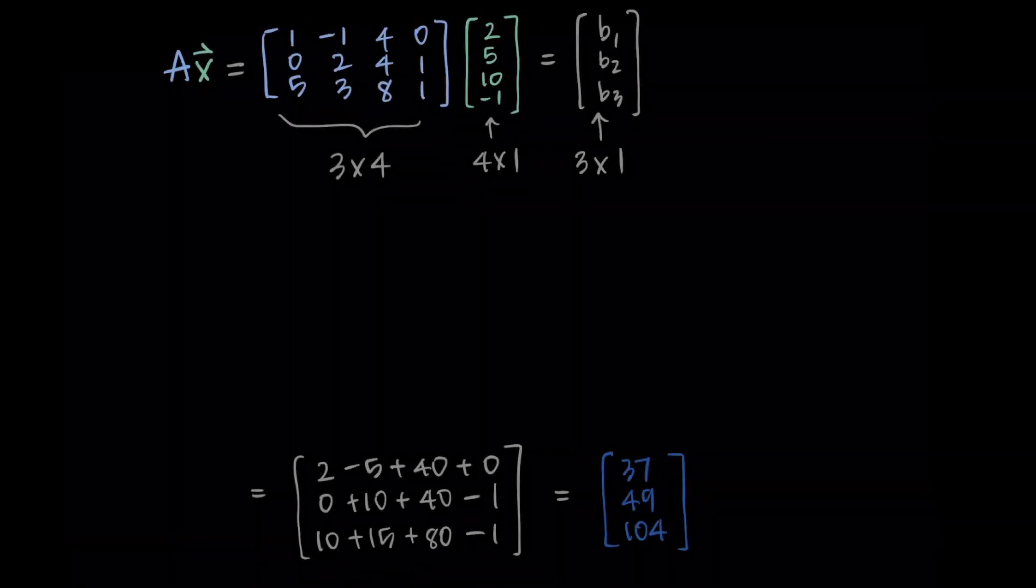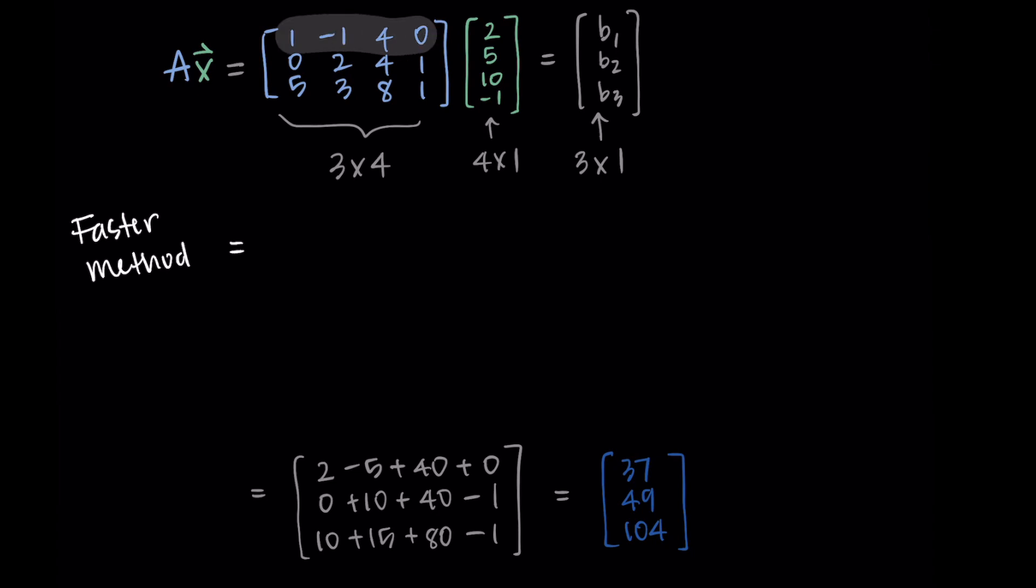Alright, so similar to the last example I just want to show you a bit of a faster method that we'll start to use as we get more fluent with this. So starting with our original problem we had A times x. And what we're going to do is go row by row. So I'm going to take the first row and multiply it by x, doing a dot product of sorts where I do each element multiplied together. So here I do 1 times 2 plus negative 1 times 5 plus 4 times 10 plus 0 times negative 1. And this is the first row of my answer.